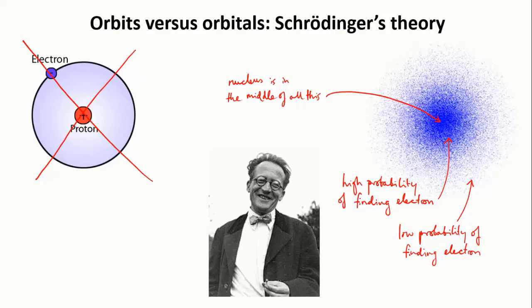This particular picture shows the probability of finding an electron in the first energy level, the lowest energy level of an atom. And to distinguish it from Bohr's idea of orbits, Schrödinger instead called it an orbital.